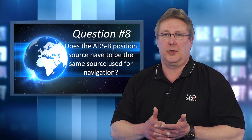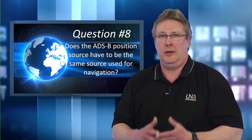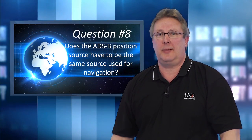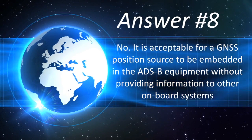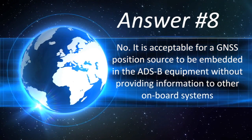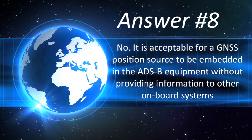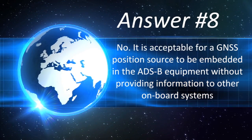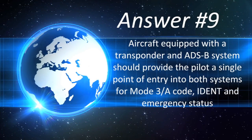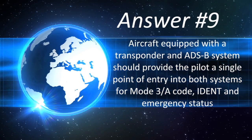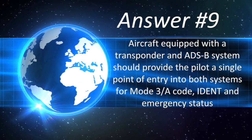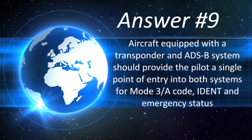Does the ADS-B position source have to be the same source used for navigation? No — it is acceptable for a GNSS position source to be embedded in the ADS-B equipment and provide position information to the ADS-B without providing any navigation information to the other onboard systems. Do you have to enter the same codes in the ADS-B control head after you have entered transponder codes? Aircraft equipped with a transponder and ADS-B system should provide the pilot a single point of entry into both systems for the Mode 3/A code, ident, and emergency status.